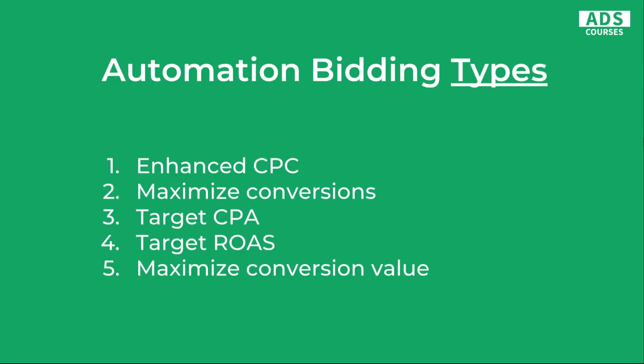In this video I won't show you how to create automatic campaigns or change the strategy to automatic in Google Ads interface, but it's actually one of the easier things to do. First of all, we have five major automatic bidding types focused on conversions: Enhanced CPC, Maximize Conversions, Target CPA, Target ROAS, and Maximize Conversion Volume, which is available in smart shopping campaigns. There are also other strategies like maximizing clicks, impression share, and ad position, but today we're going to focus on performance and conversion strategies.